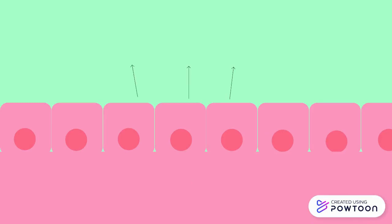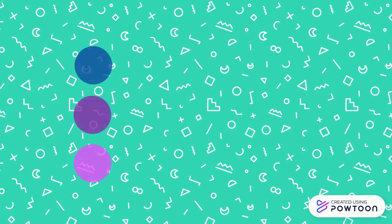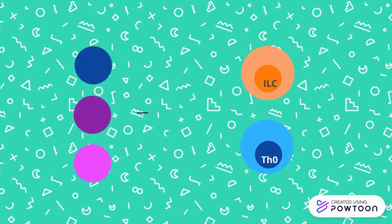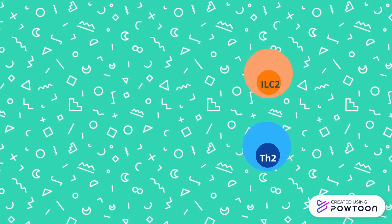In early and acute infection, epithelial cells that come in contact with the parasite release a group of alarmins. Alarmins are danger signals released from stressed or infected cells. They promote activation and differentiation of type 2 innate lymphoid cells and T helper type 2 cells.